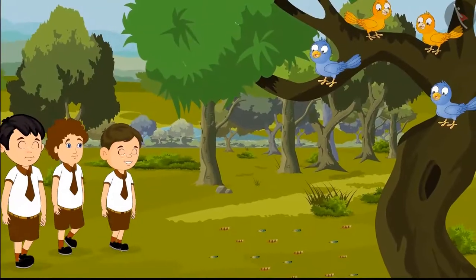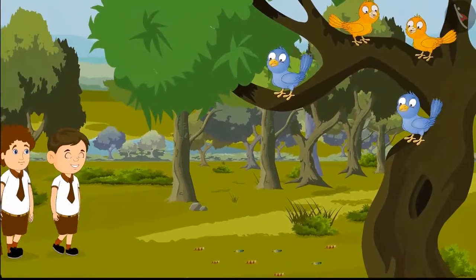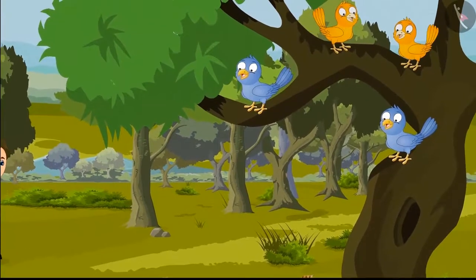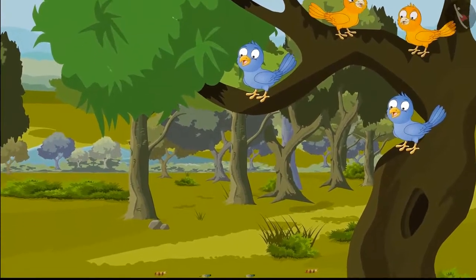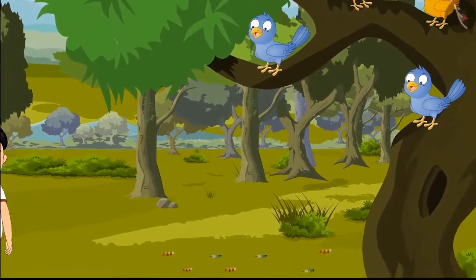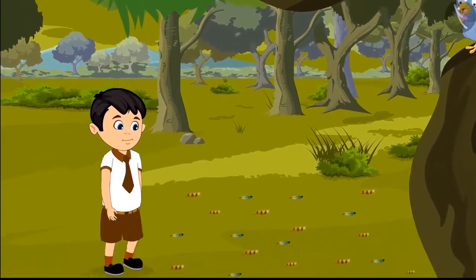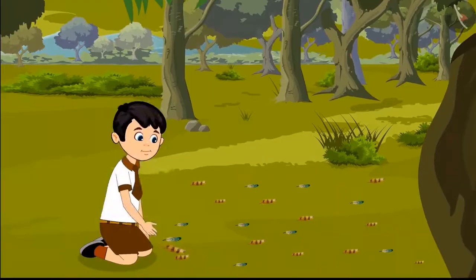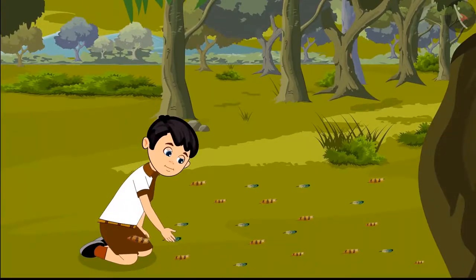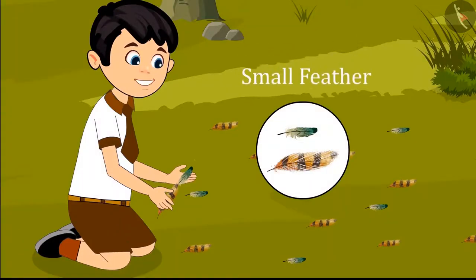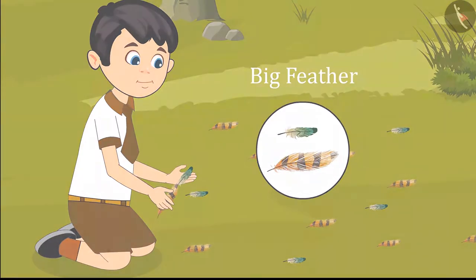While walking, he found a tree on which a lot of birds were sitting. Under that tree were a lot of fallen feathers. Chotu thought to take two feathers from them: "I will take one small feather and one big feather."